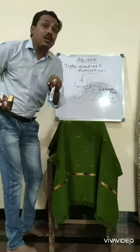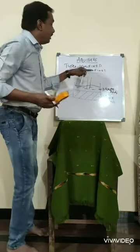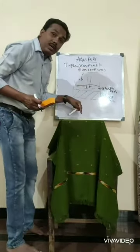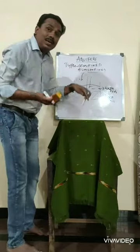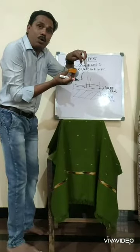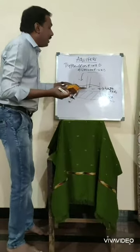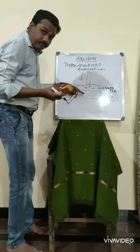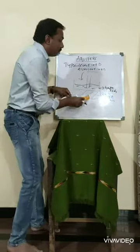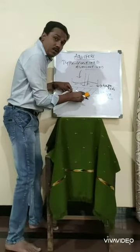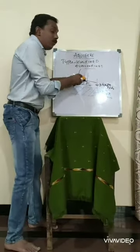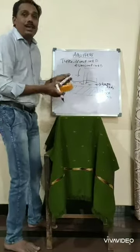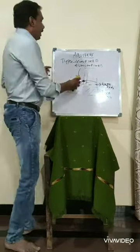So aquifers are of two types: one is confined aquifers and the other is unconfined aquifers. In confined aquifers, the water is present between the rock bodies. In unconfined aquifers, there is a rock body below and water is present above it near the surface.